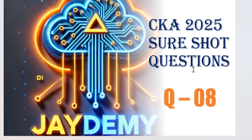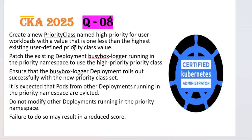Welcome back to JDME. Today we are going to discuss CKA exam series question number eight. The question says you need to create a new priority class named 'high-priority' for user workloads with the value that is one less than the existing highest user-defined priority class. We need to create a new priority class which is less than the existing user-defined priority class already in the cluster.